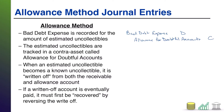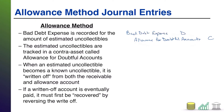That is a contra asset on your balance sheet that is going to show up right beneath the receivable — it'll say AR, next line, less allowance for doubtful accounts. This presentation enables investors to see what customers owe you and how much of that you think you're not going to get paid.